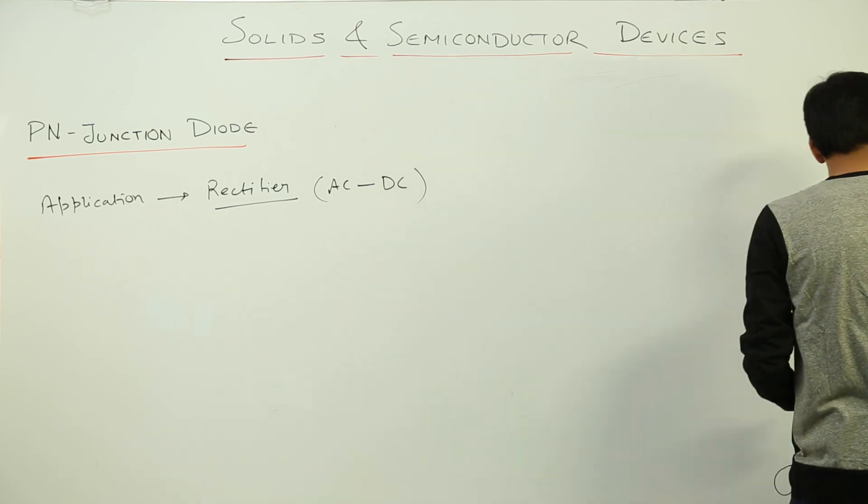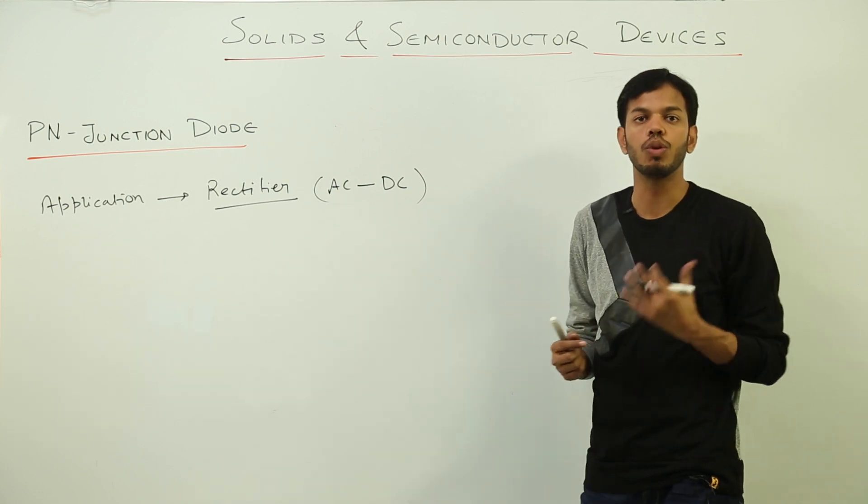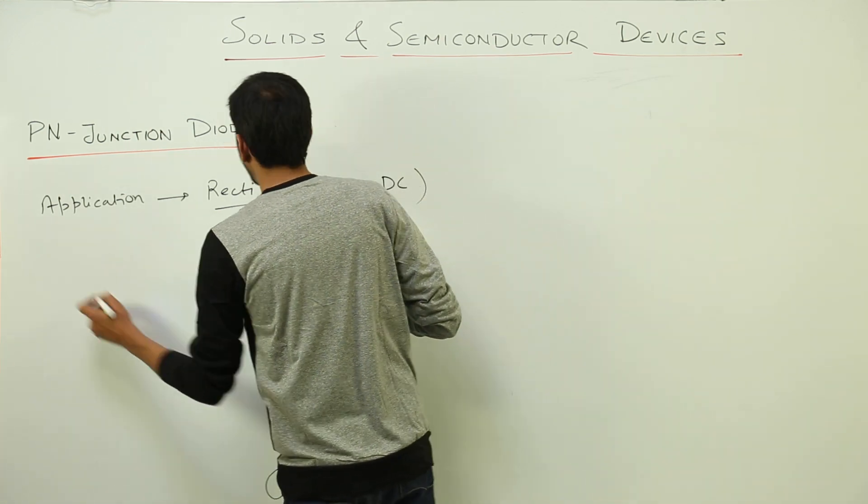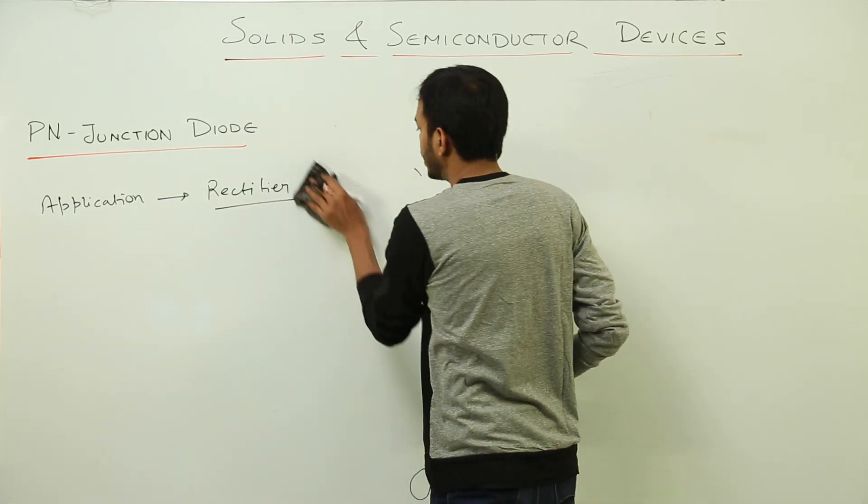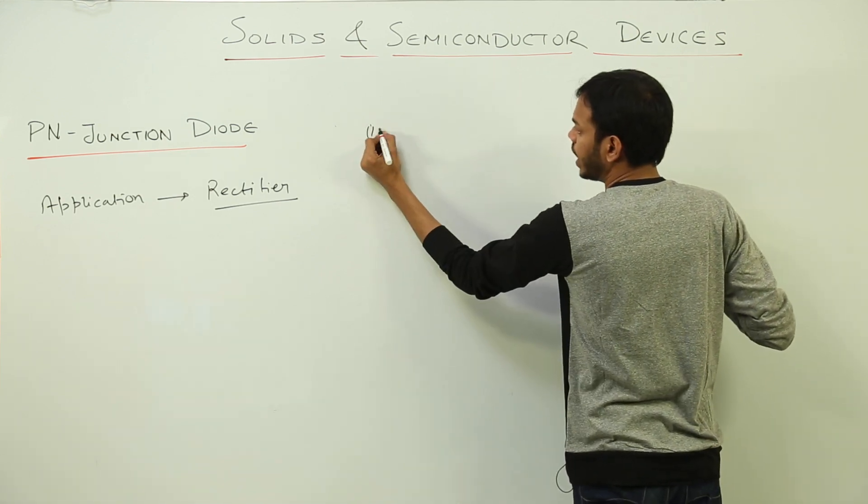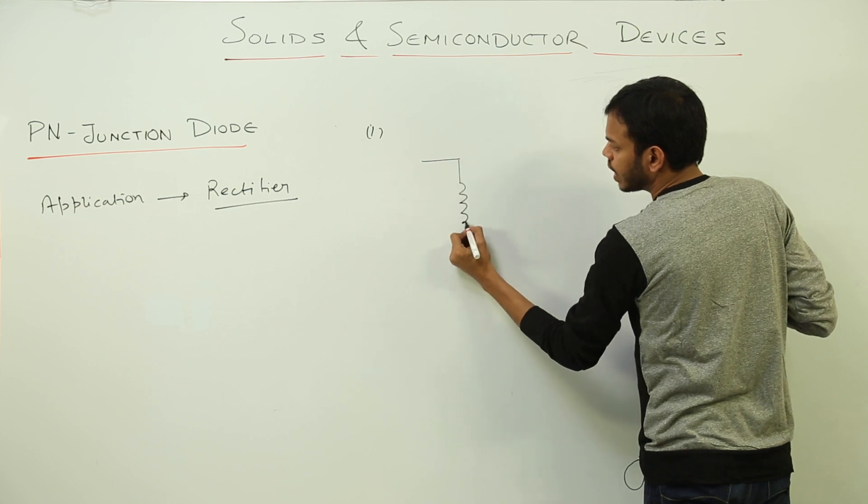once we study about rectifier, that is the device which converts AC to DC, we'll move on to triodes which are basically transistors. The first one is called half wave rectifier. I need a bigger space so I'm removing this. Right now we're doing half wave rectifier. Now why it is called half wave rectifier?